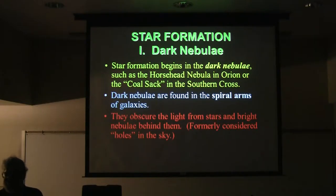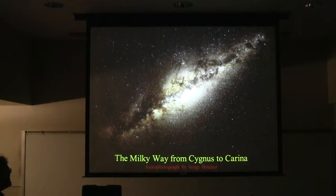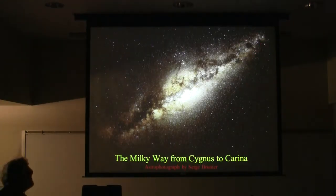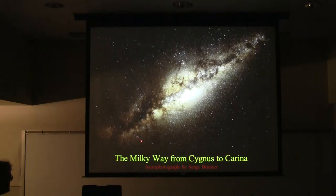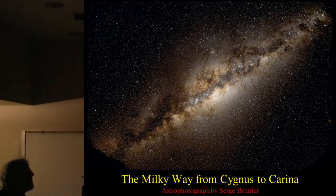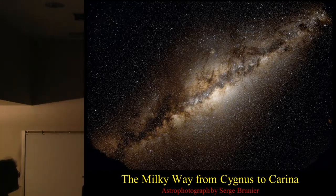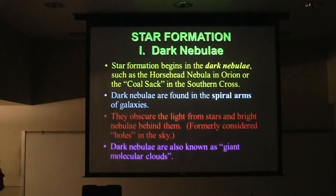Here's one more panorama along the Milky Way. You can see Scorpius with Antares, Sagittarius, Lyra with Vega, Altair in Aquila, all the way through to Alpha and Beta Centauri. This is about half of the Milky Way, centered on the center. All those dark areas are dark nebulae — sites of new star formation.